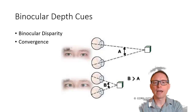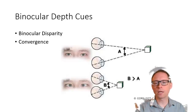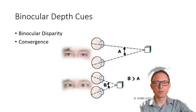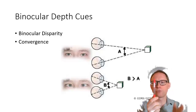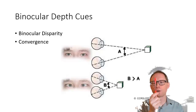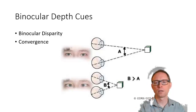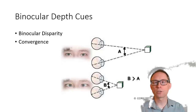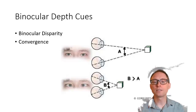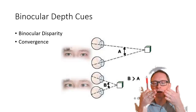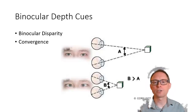There's another binocular depth cue: convergence. When I look at a pen held in front of me, my two eyes converge. If the pen is close, they converge more; if the pen is farther away, they converge less. Your brain can sense how much your eyeballs are converging — how much they're crossing. If they're crossing a lot, the object must be very close. If they're not crossing very much, it must be far away. Your brain senses the angle of convergence and determines distance from it.